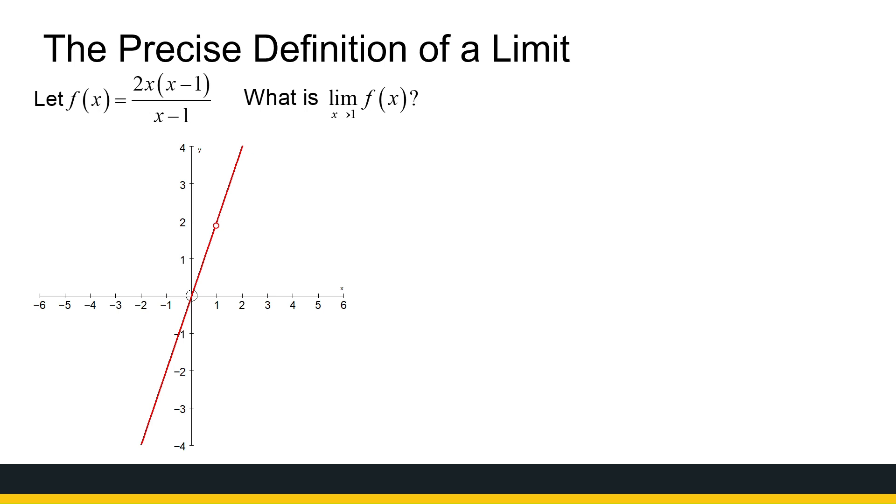We've already seen different ways to finding the limit. We can see from the graph as x approaches 1, my y value will approach 2. So we know our answer is going to be 2. But now, what we're going to do is use the precise definition of the limit to see how that works in this case.